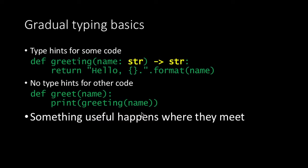We can still have some code without annotations, without type hints at all. IDEs or static analyzers can see that we call a function expecting a string, and if you call it with something which is not a string, it can still tell you that you're providing an integer into a function that eventually sends it to another function that expects a string. PyCharm knows how to do that. So even with partial type hinting, you still get a lot of advantage.